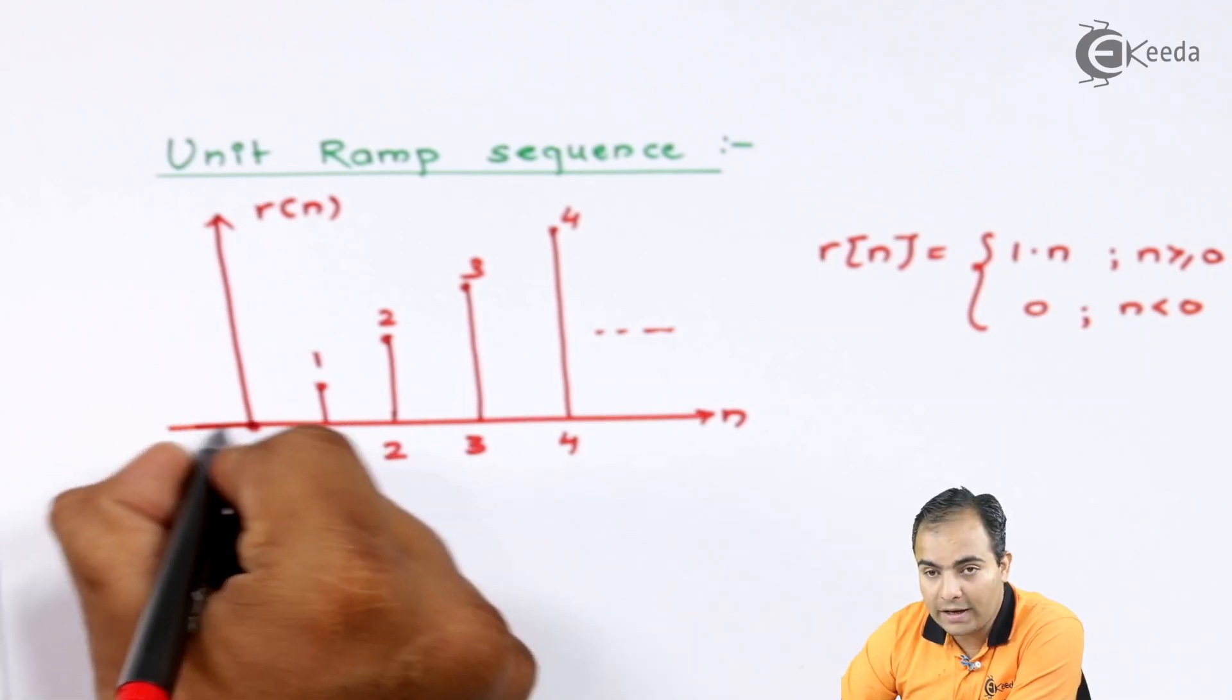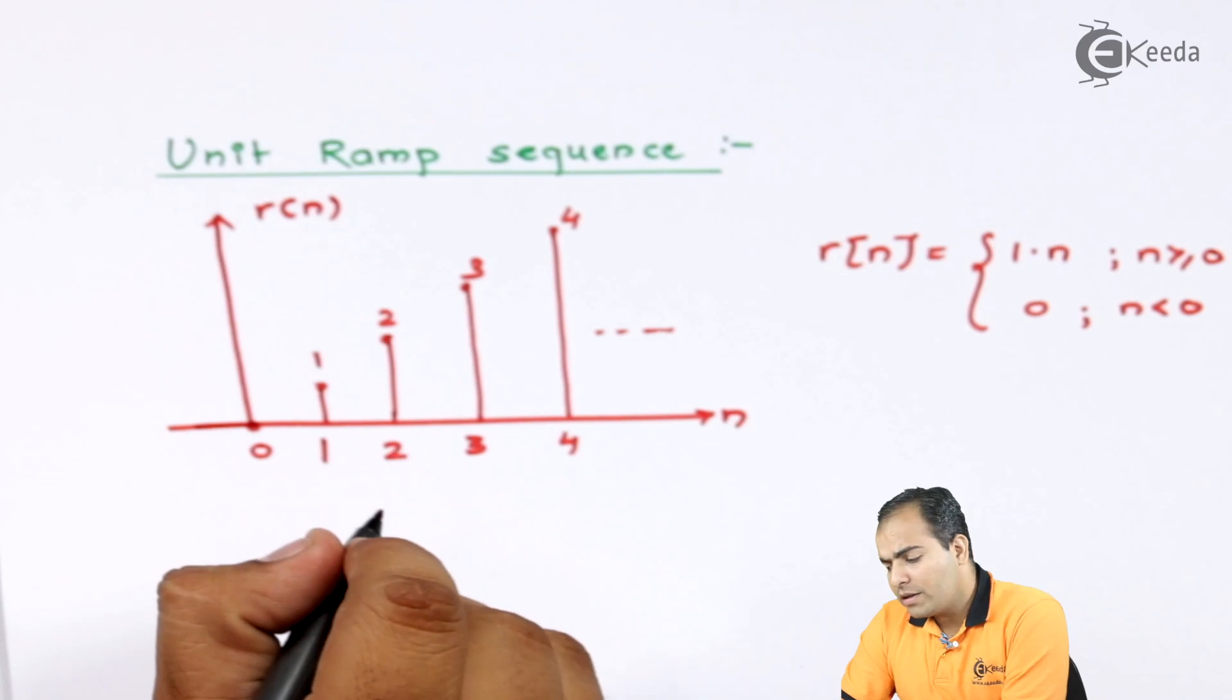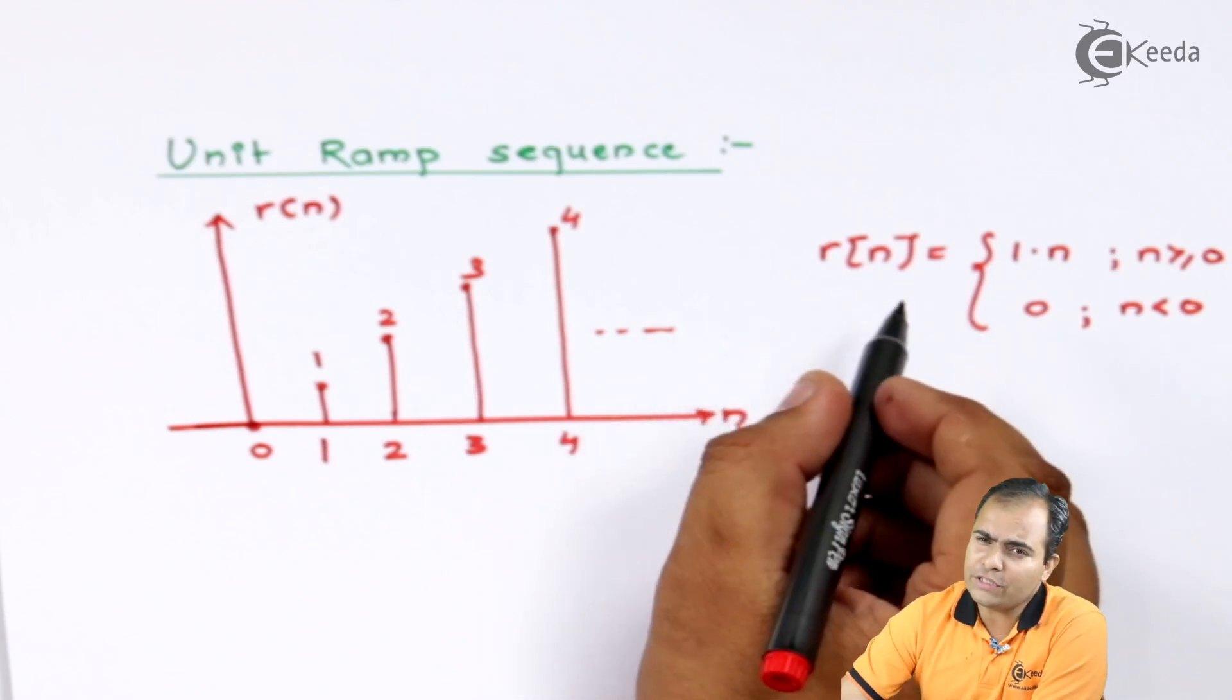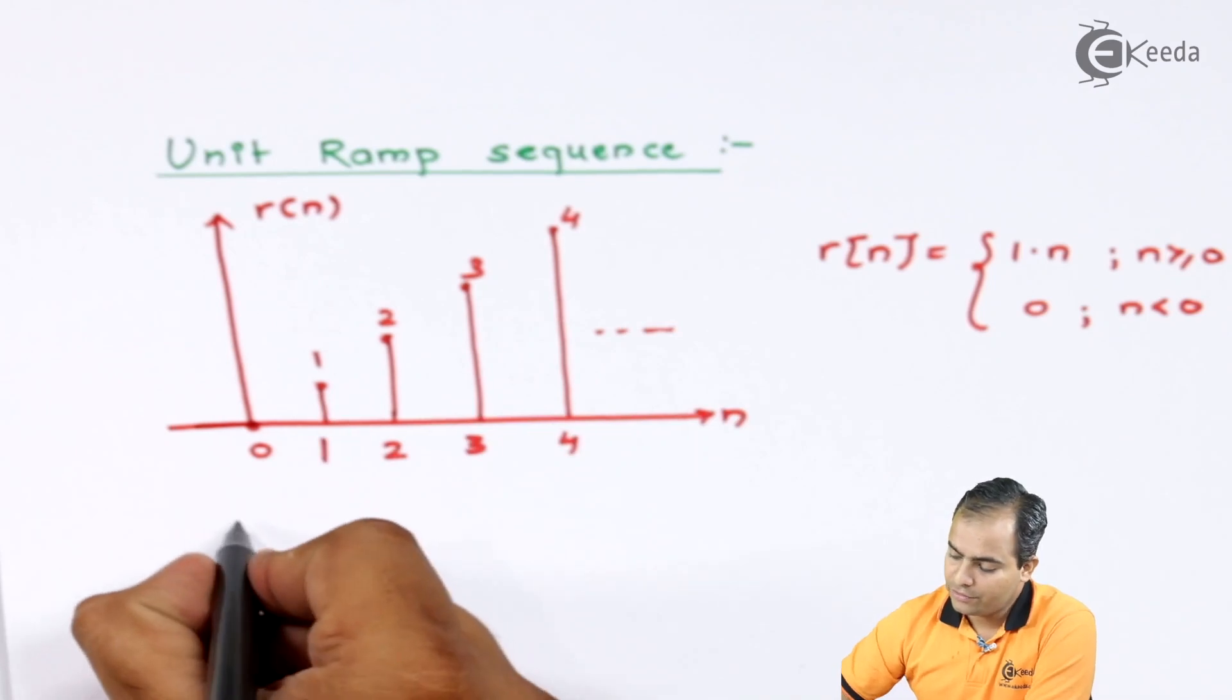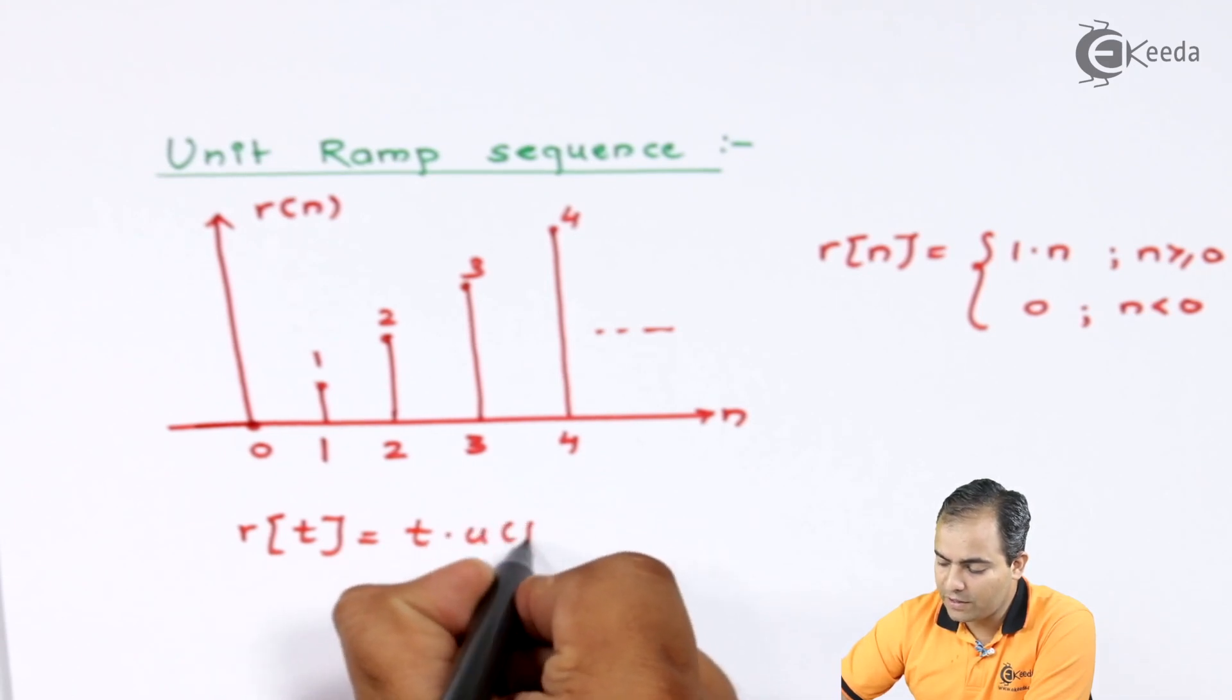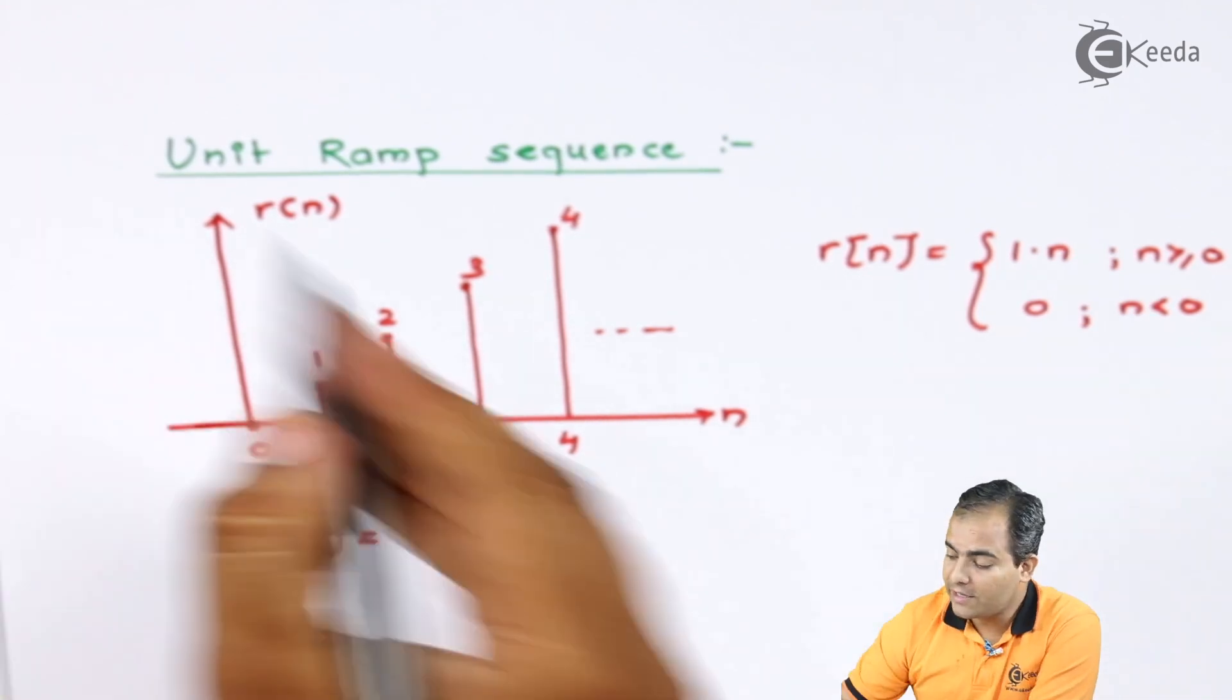not drawn anything on the left-hand side of the origin. Now, you can generate this sequence as I told you in continuous time. You can generate this sequence using unit step sequence also. How? r(t) is represented by t·u(t) in continuous time, whereas in discrete time